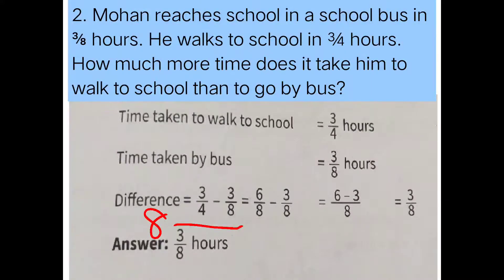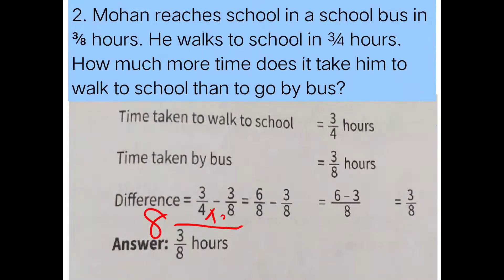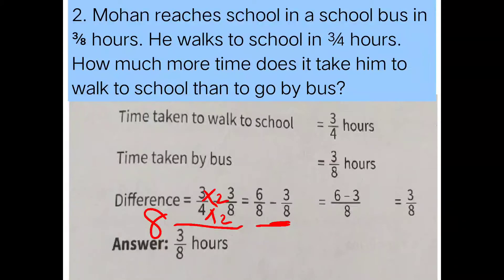We have 3/4, and 4 is not equal to 8, so we multiply by 2: 3 times 2 is 6 and 4 times 2 is 8. Whatever number you multiply the denominator by, you must multiply the numerator by the same. So 3/4 becomes 6/8. We write 6/8 minus 3/8. Now the denominators are the same, so we only subtract the numerators: 6 minus 3 is 3. The answer is 3/8 hours.